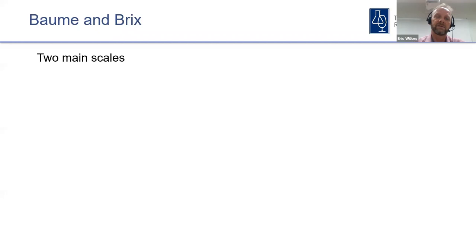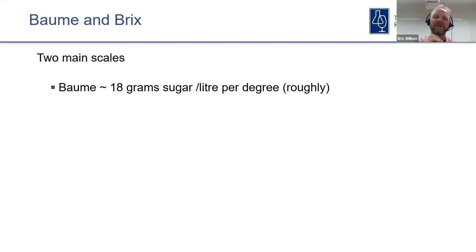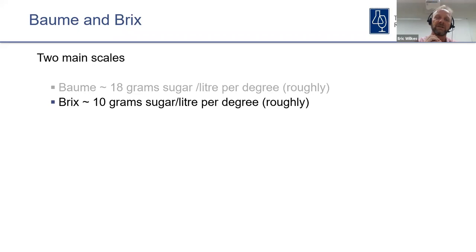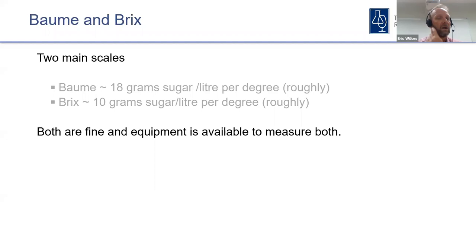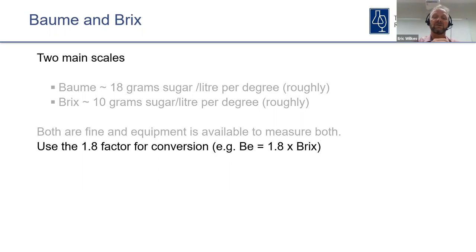There are two main measurement scales. Baumé gives roughly 18 grams per litre, and Brix gives roughly 10 grams per litre. They're not actually defined as grams per litre — they're grams per total mass of solution — but this is the working rule of thumb. The conversion factor between the two is 1.8: multiply or divide by 1.8 to convert between units. It's a rough approximation but good enough for what we need in the wine industry.